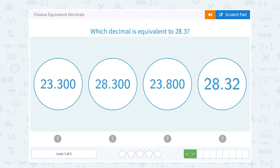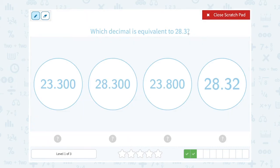Which decimal is equivalent to 28.3? Well, remember the only thing we can do that doesn't change the value at all is add zeros to the end. So this would be the same as 28.30 which I don't see. And first of all I'm going to cross off these 23s. They don't even have the same whole number part.